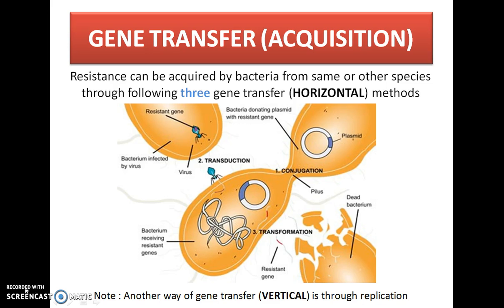There are three methods of horizontal gene transfer: conjugation, transduction, and transformation. In conjugation, a pilus bridge forms between two bacteria — one having the resistance gene in its plasmid, and another lacking it. The resistance-gene-carrying plasmid transfers from the resistant bacterium into the non-resistant bacterium, where it combines with that bacterium's plasmid. When that bacterium replicates, it will carry the resistance gene.